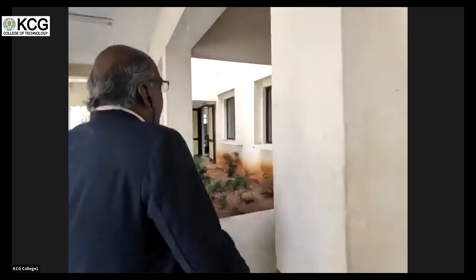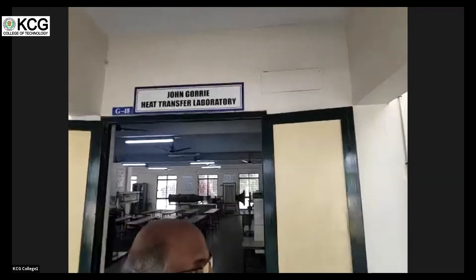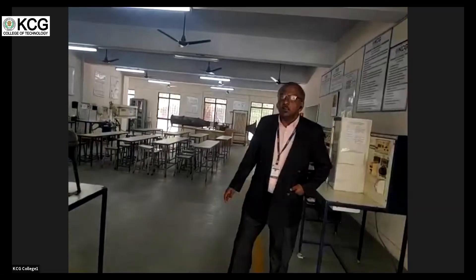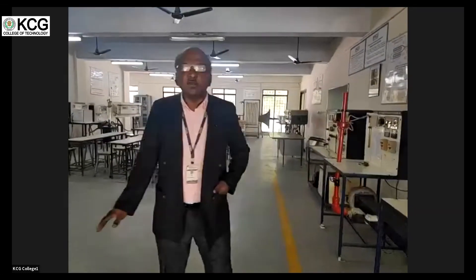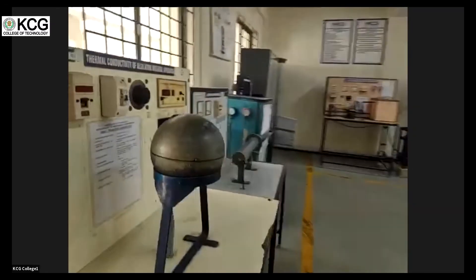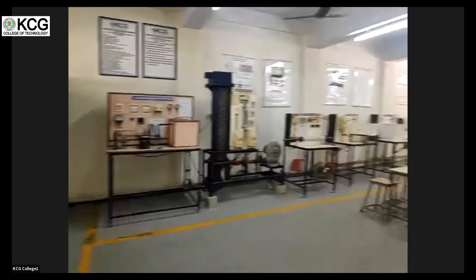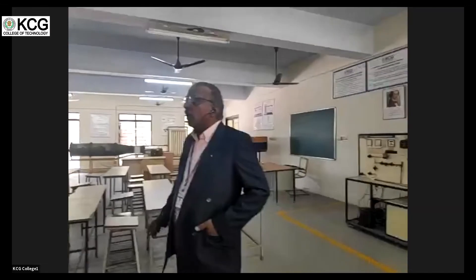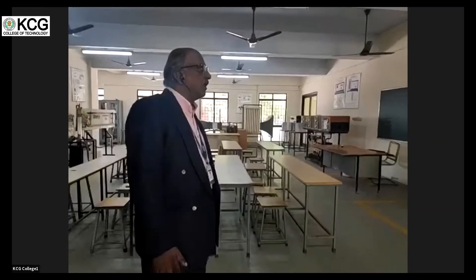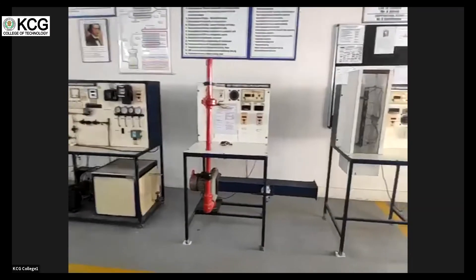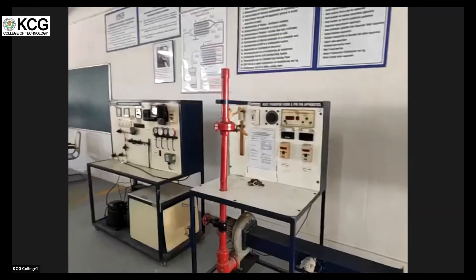Next we move to the John Corey Heat Transfer Laboratory. There are three modes of heat transfer: conduction, convection and radiation. This laboratory is equipped to measure emissivity, thermal conductivity and heat transfer coefficient. We also have a refrigeration test rig and air conditioning test rig to find the coefficient of performance of a refrigerator and air conditioning system. This lab is used by fifth-semester mechanical students.